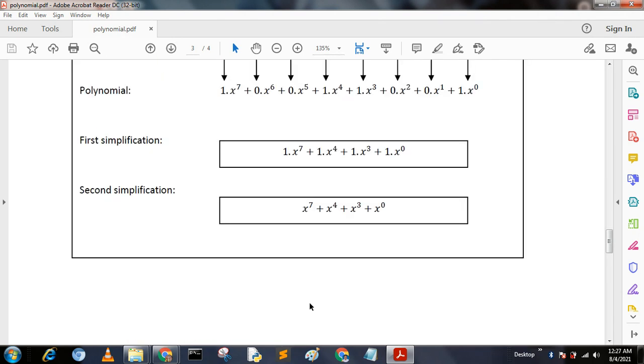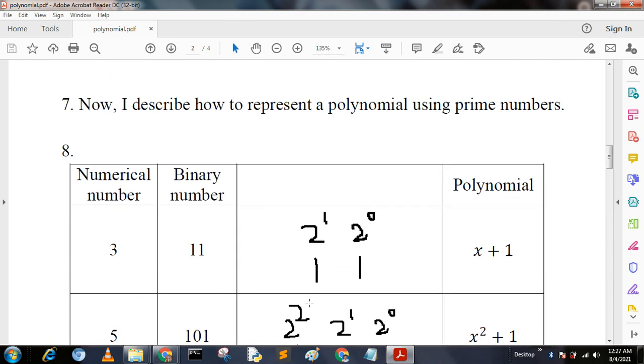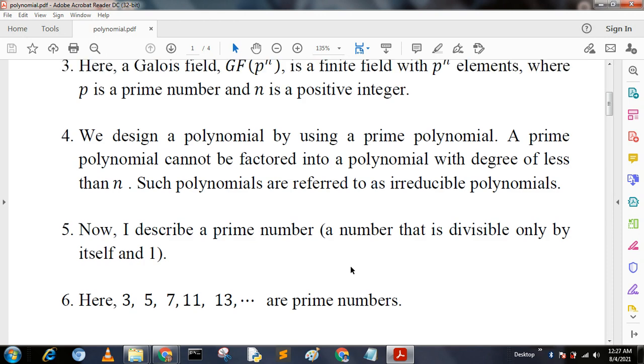Again I mentioned that there are two types of polynomials: one is irreducible polynomials and another is non-irreducible. Irreducible polynomials means which cannot be factored, and non-irreducible means which can be factored.